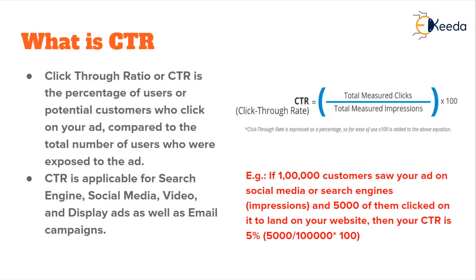Let's say there are one lakh impressions generated in a period of one month for the ad campaign you ran. Out of those one lakh customers who searched anything related to whatever your ad was about, about 5,000 of them clicked on it to land on your website and explore more about your product or maybe buy the product. These 5,000 customers who actually clicked on your ad are the total measured clicks — the people who clicked on the impression of the ad generated for them.